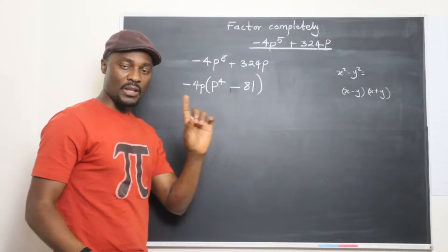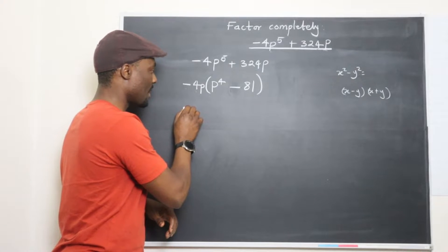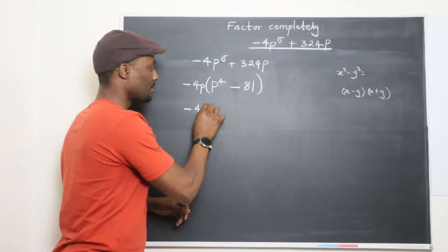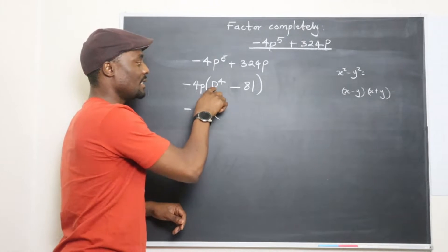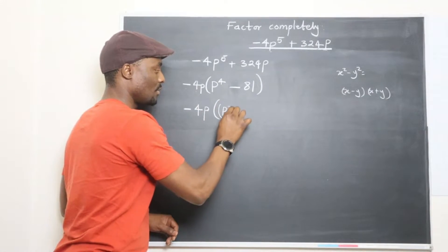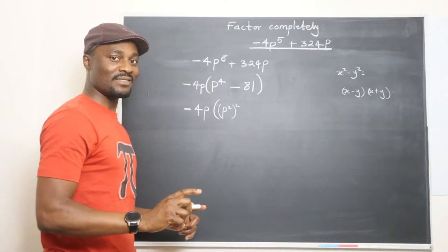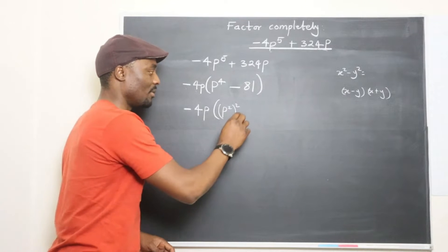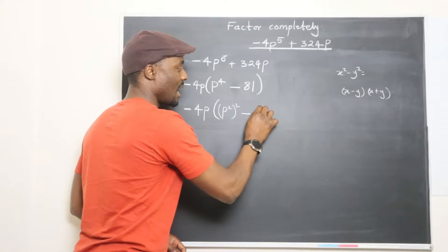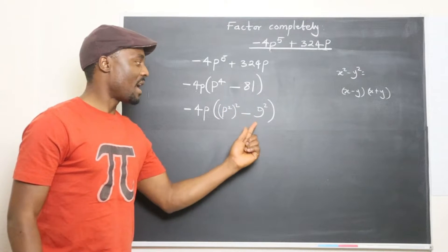So we want to see if we can express these two as a difference of squares. And I think we can, because this expression is going to become negative 4P into, this P to the fourth can be written as P squared squared. You see that? That's going to save us from trouble. Minus, this is 9 squared.